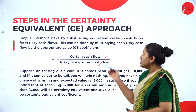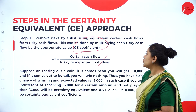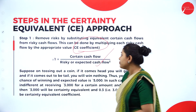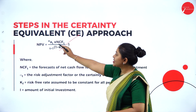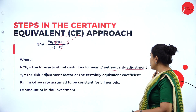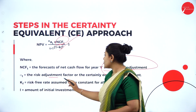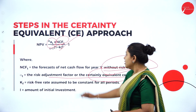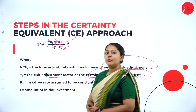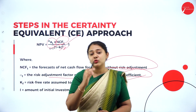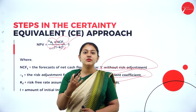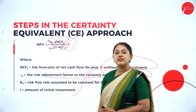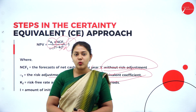Step 1 is to take up the certainty equivalent coefficient, which will be given in the question. For the net present value formula: NCF stands for net cash flows for the year without risk adjustment; the certainty equivalent coefficient is the risk adjustment factor given in the question; and the risk-adjusted discount rate is applied using a PV table at Re. 1. The initial investment is denoted as I. This is the formula to calculate NPV under the certainty equivalent approach.